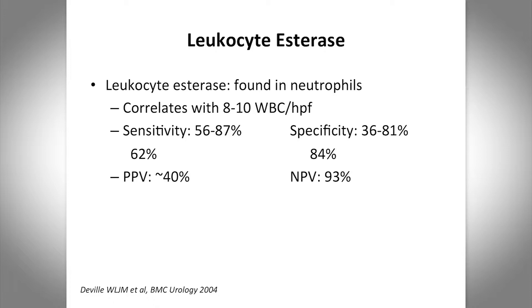Positive leukocyte esterase correlates with at least 8–10 white cells per high-power field. However, 8–10 white cells per high-power field may actually be normal in a significant proportion of elderly patients. The sensitivity of leukocyte esterase — where the gold standard is greater than 100 × 10⁶ colony-forming units per mL — is 56 to 87 percent, with variability depending on the population. In hospitalized patients it tends to be lower; in outpatient ambulatory settings it tends to be higher. The specificity is 36 to 81 percent. In inpatient populations it's not really a great test.